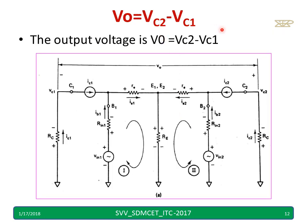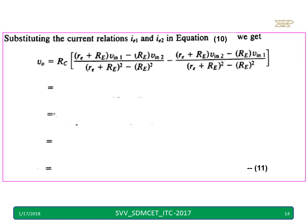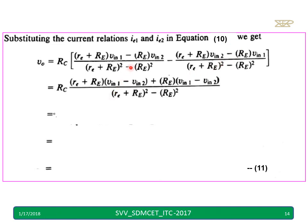We know V0 equals VC2 minus VC1 because we take the voltage across collectors 1 and 2, so the output is their difference. The output voltage V0 equals VC2 minus VC1. Substituting VC as IC times RC, and since IC is approximately equal to IE, we substitute IE2 and IE1 into equation 10. The result becomes proportional to IE1 minus IE2, which I will now simplify.